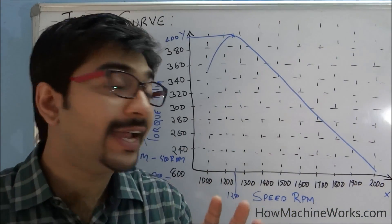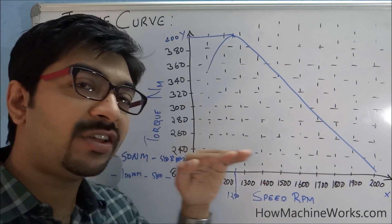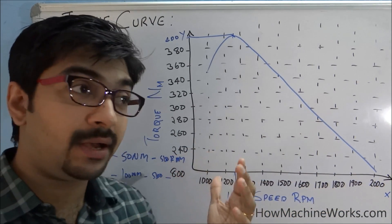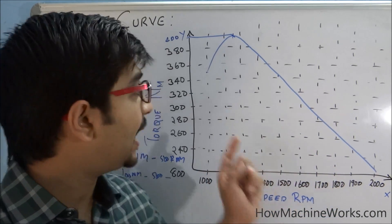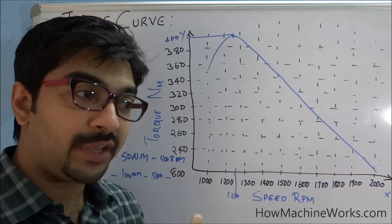So for getting the idea more clear, I can give you an example. Like if you're going on the highway, you will be on the maximum speed. You are going on a fourth gear or on a fifth gear, gives a maximum RPM. But at that point of time when you're riding on the fourth gear or the fifth gear, the torque will be less.